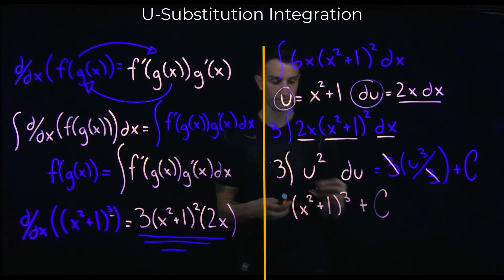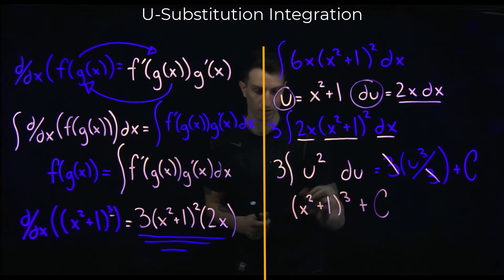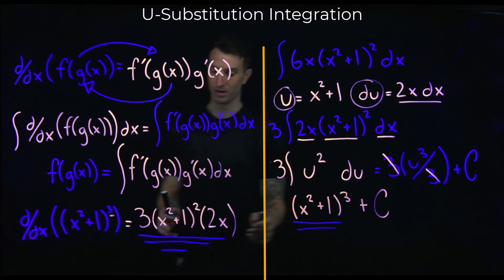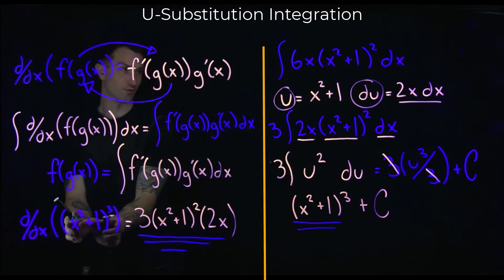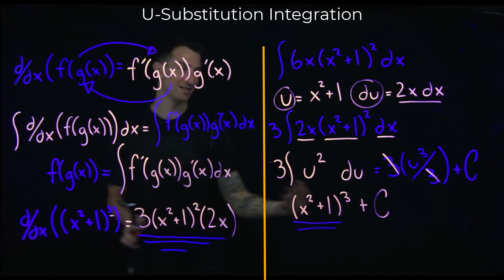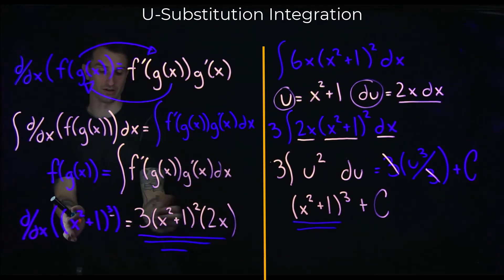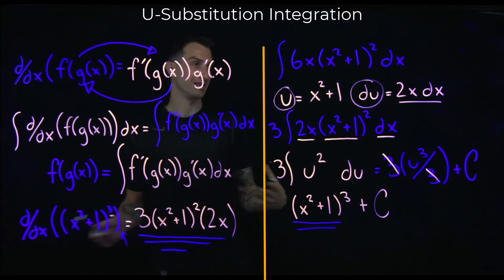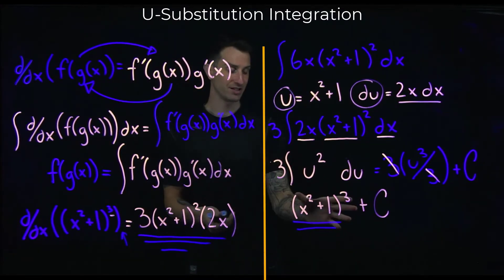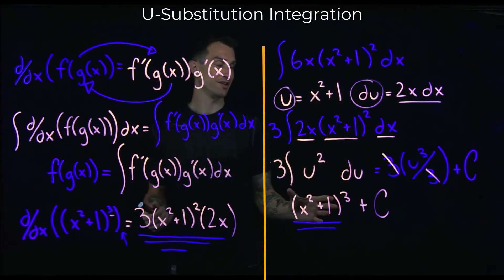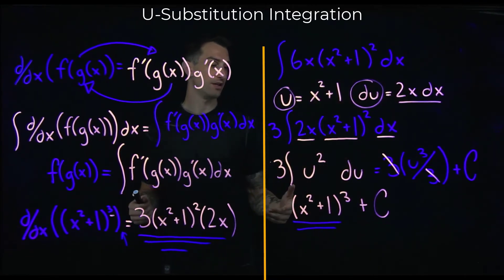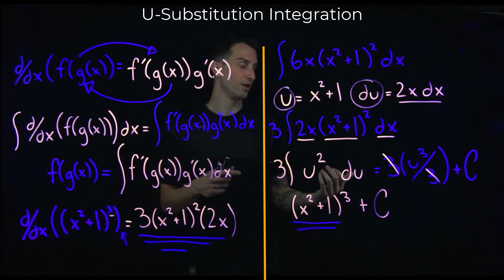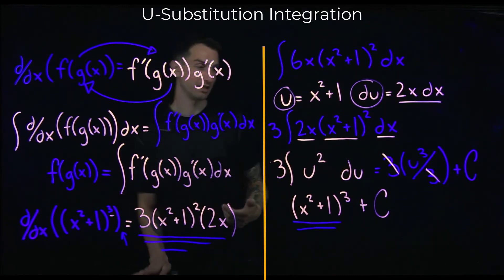And what do we notice? The result is (x² + 1)³ plus c — similar to what we started with. The plus c accounts for any constants that would vanish when taking the derivative. So again, we're just undoing the chain rule. We'll go through more examples in the following parts of this video.